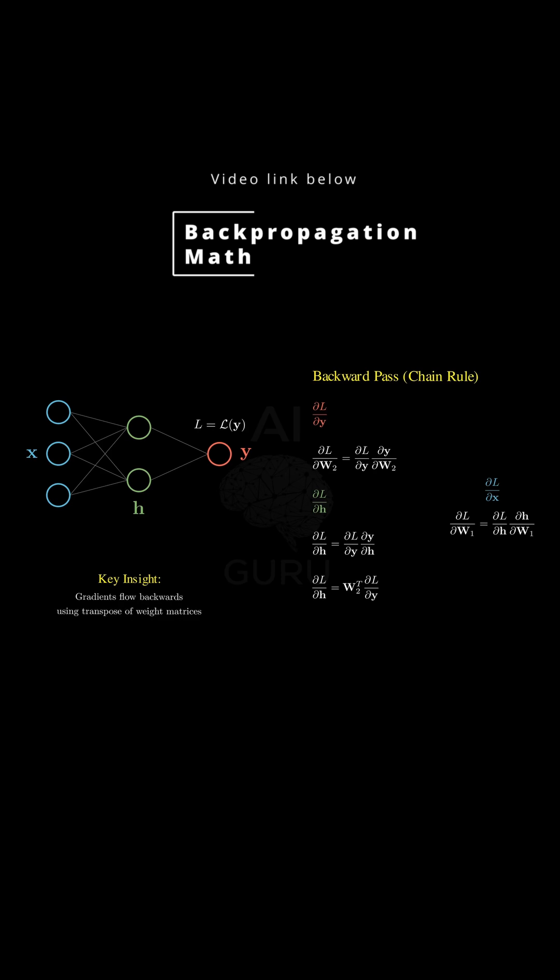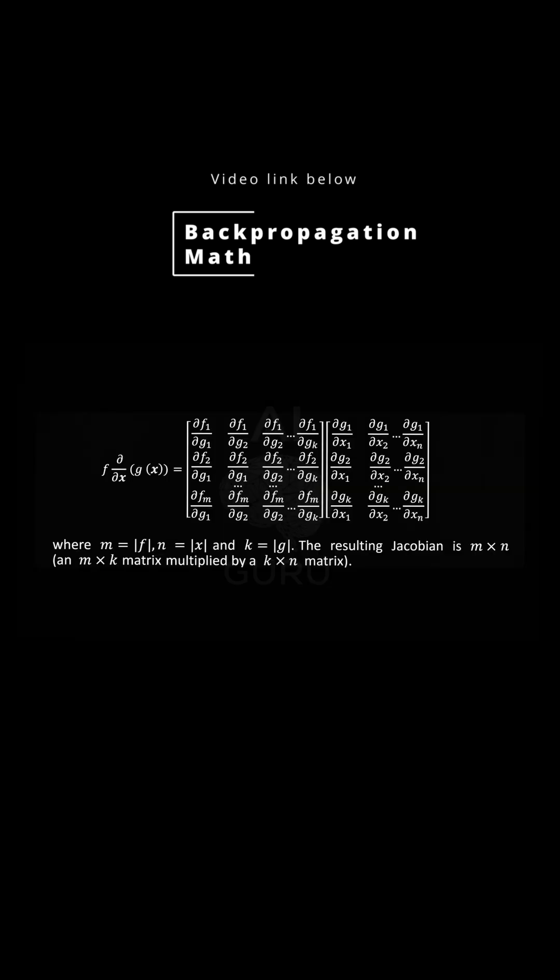And the dimensions have to line up perfectly. Say the final output f has m components, the input x has n components, and the intermediate layer g has k components.